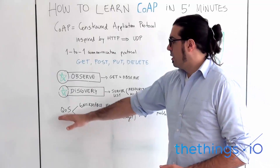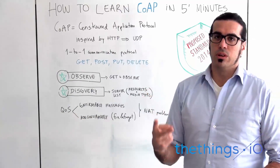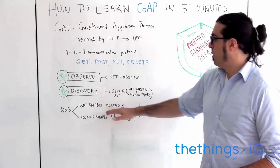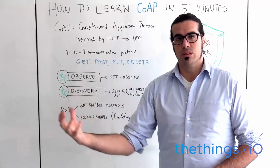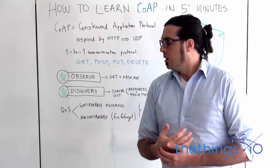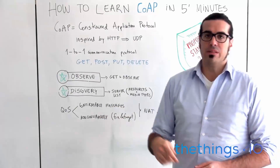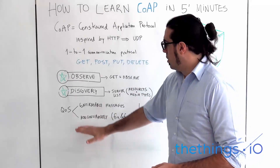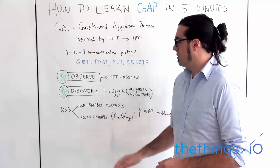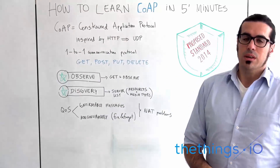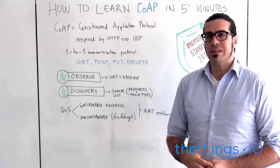Finally, for quality of service in CoAP, there are two different options. The first is the confirmable message — because it's over UDP you don't know if the message is being received, but you can get a confirmation that it has been received. The second is non-confirmable, which is like in MQTT — fire and forget — so you don't care if the other party has received the message or not.